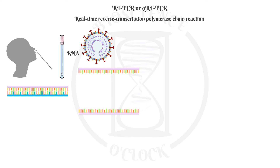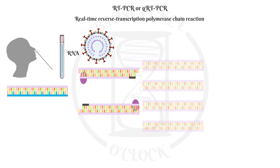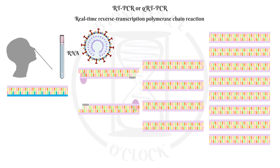If the primers find their target sequence, they bind the complementary DNA and the polymerase enzyme starts to elongate the DNA. This amplification cycle is repeated several times, and with each cycle the amount of DNA doubles. The products of this reaction can be identified in a specific or nonspecific manner.